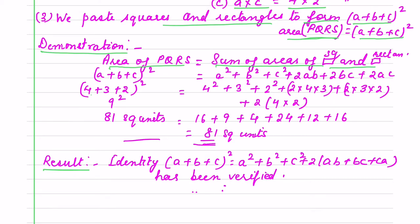So here in LHS we have, I am putting the value 4+3+2 and here I put the value. You will see that LHS is equals to RHS that is 81 square units. So this way we verify the identity (a+b+c) whole square.